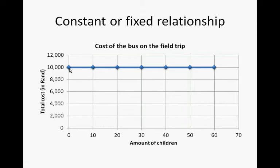No children, we will pay R10,000. If 10 children go, we will pay R10,000. If 20 children go, R10,000. If 30 children go, R10,000. If 40 children go, R10,000, and so on. So this is a graphical representation of a fixed or a constant relationship.